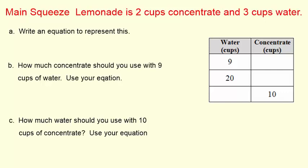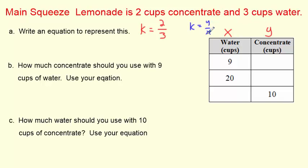Let's take a look at another problem — Main Squeeze lemonade. The recipe is 2 cups of concentrate for every 3 cups of water. We can read these things and find our K — the proportionality constant. It's going to be 2 cups of concentrate for every 3 cups of water. Water is X, concentrate is Y. So y over x — that formula to find K — gives us K equals 2 thirds. Our goal is to write the equation and use it to fill in the table and answer the questions.